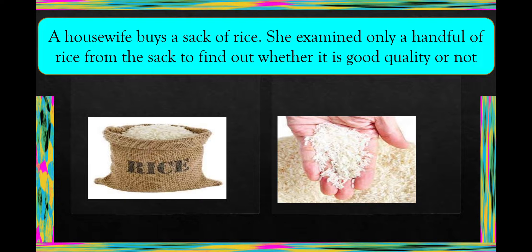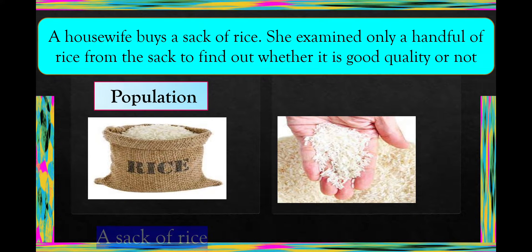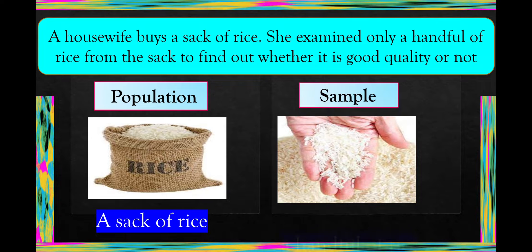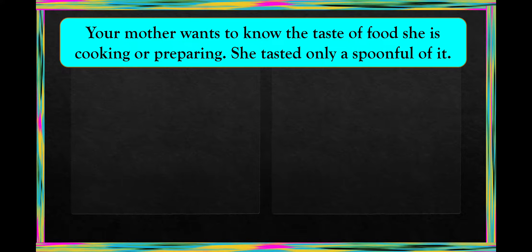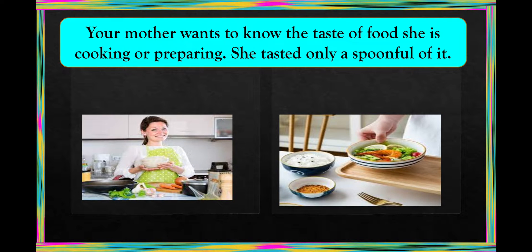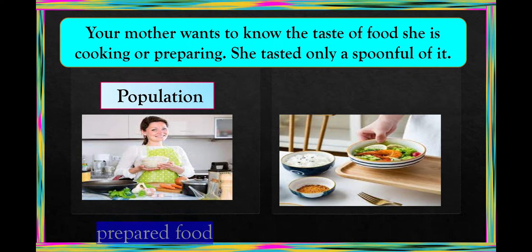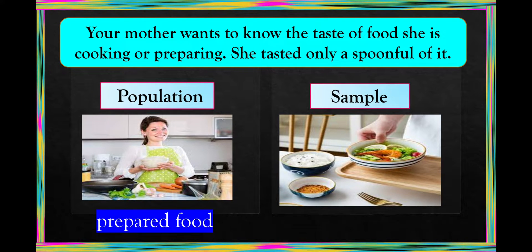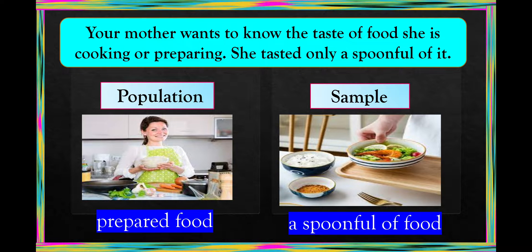We're going to identify which is sample and population. The population here is a sack of rice, while the sample is a handful of rice. Next, a mother wants to know the taste of food she's cooking. She tasted only a spoonful of it. So the population is the prepared food, while the sample is a spoonful of food. Now that you already know how to represent a sample of a population, next we're going to discuss the process of getting a sample which is a good representation of the population.